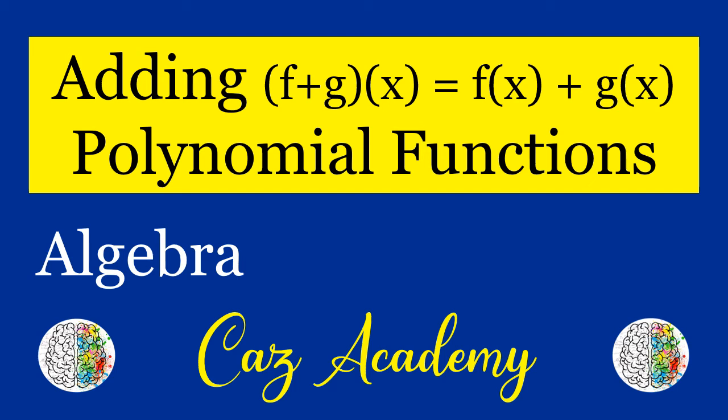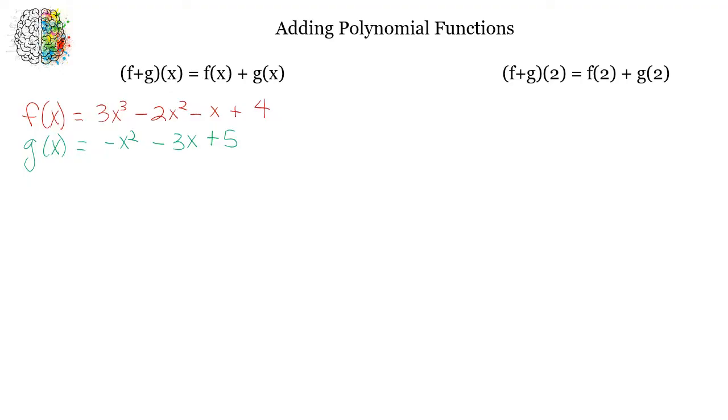Welcome to today's algebra tutorial on adding polynomial functions. If we're given the two equations f of x equals 3x cubed minus 2x squared minus x plus 4, and g of x equals minus x squared minus 3x plus 5, and we are asked,